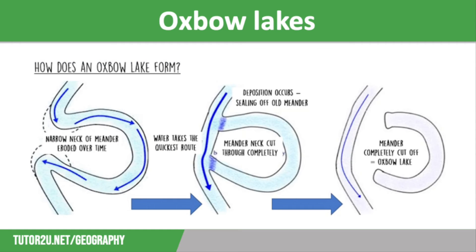Over time, meanders can cause oxbow lakes to form. As meanders migrate, their bends will get bigger through lateral erosion and the meander neck will start to get tighter, leaving a narrow strip of land separating the river channel. A really tight meander is called a swan's neck meander.